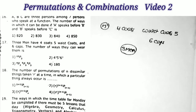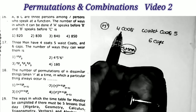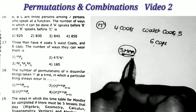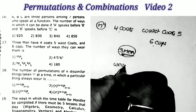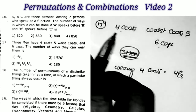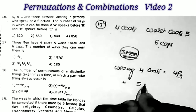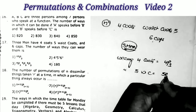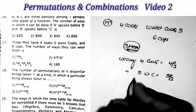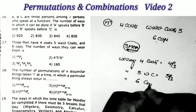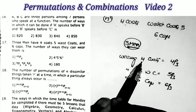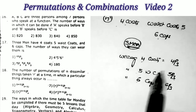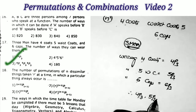Sum number 17: three men have four coats, five waistcoats, and six caps. Find the number of ways they can wear them. Wearing of four coats by three men equals 4P3. Wearing of five waistcoats by three men equals 5P3. Wearing of six caps by three men equals 6P3. Therefore the answer is equal to 4P3 into 5P3 into 6P3. That is the third option.